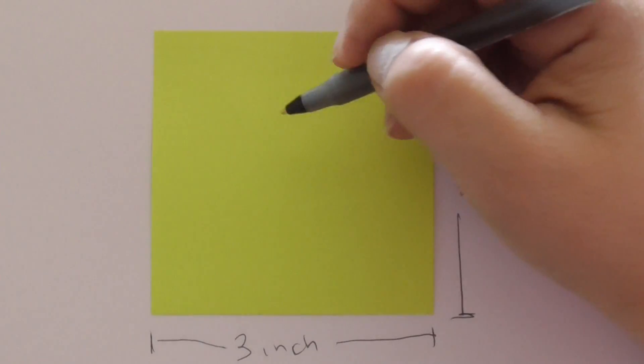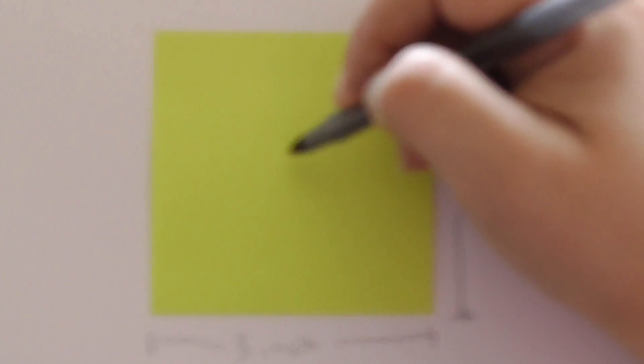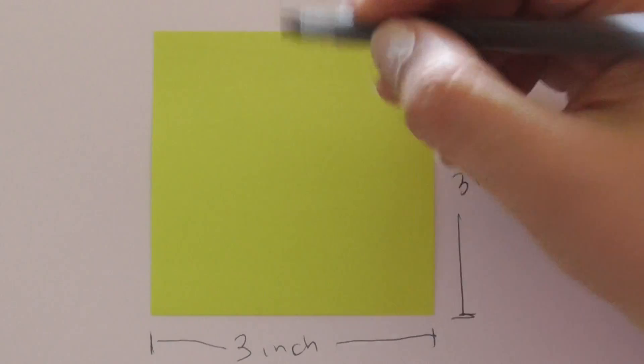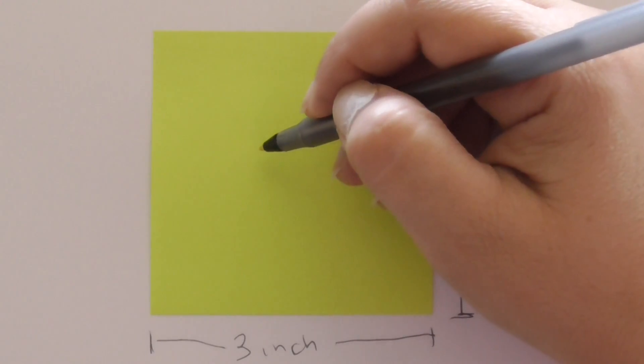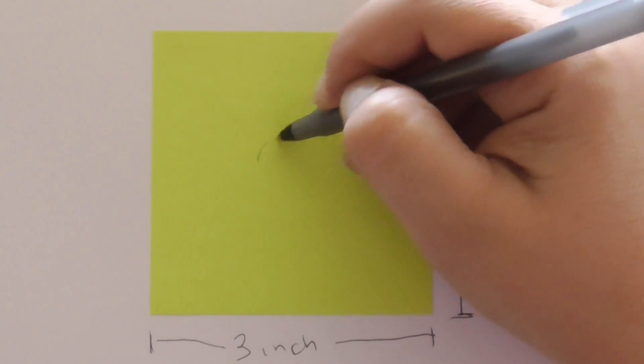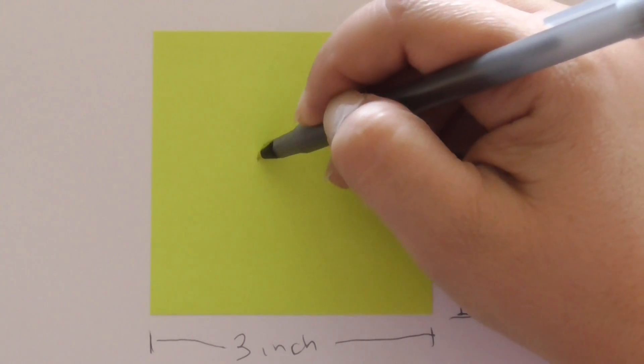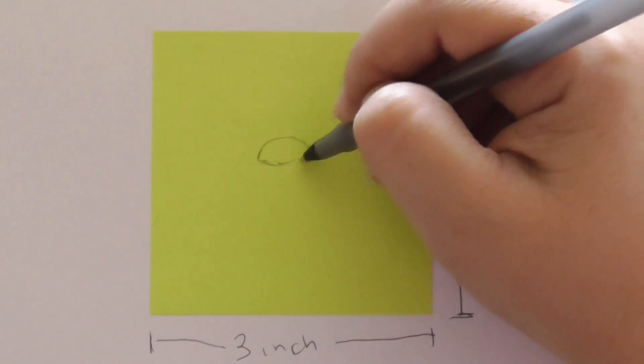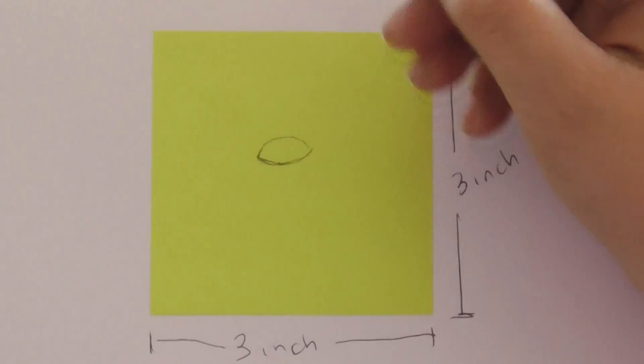We are going to start with drawing an eye, and it could be a realistic eye or a cartoon eye. I'm gonna do, you decide what kind of eye you want to draw. I'm gonna draw maybe a combination of both.